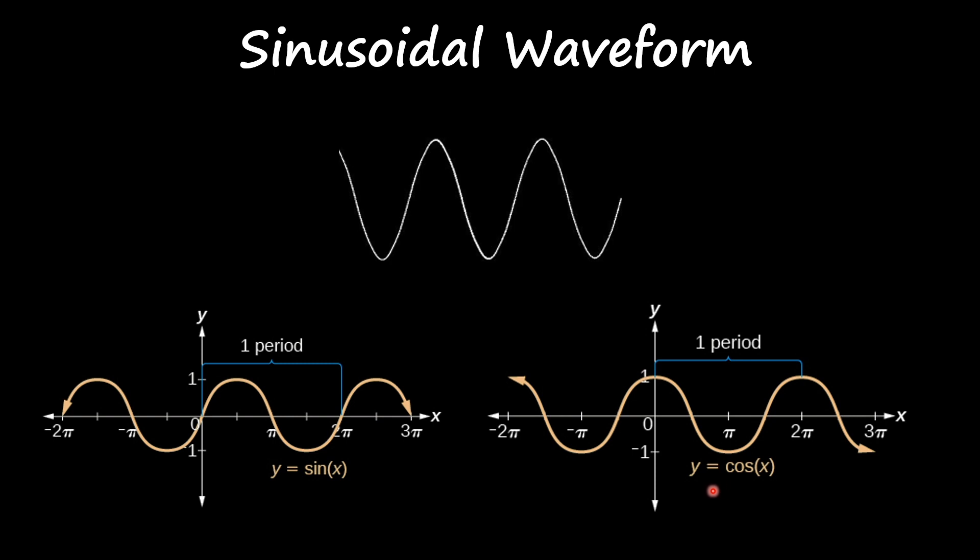In a lot of engineering books you will see these sinusoidal waveforms being represented as the cosine of x. Just have in mind that they are both representing the same sinusoidal waveform, just at different points in time.